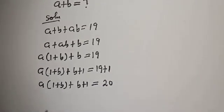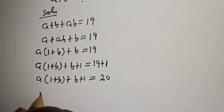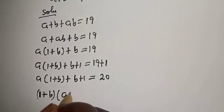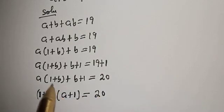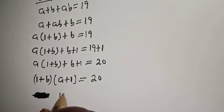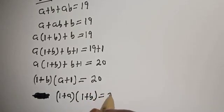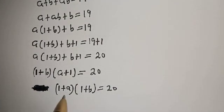Now we can factor this: A(1 + B) + (1 + B) = 20, which can be written as (1 + A)(1 + B) = 20. Remember, A and B are positive integers, so 1 + A will be greater than or equal to 2.